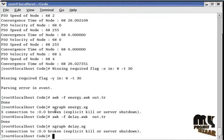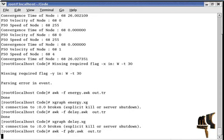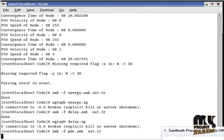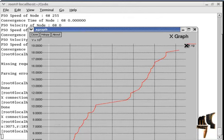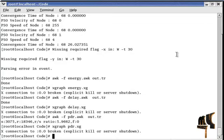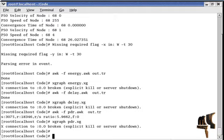Next one is PDR. Awk minus f PDR dot awk out dot tr. This command is used to generate our packet delivery ratio graph. After graph generation, we run PDR dot xg. So this is packet delivery ratio between the source and destination and overall network.